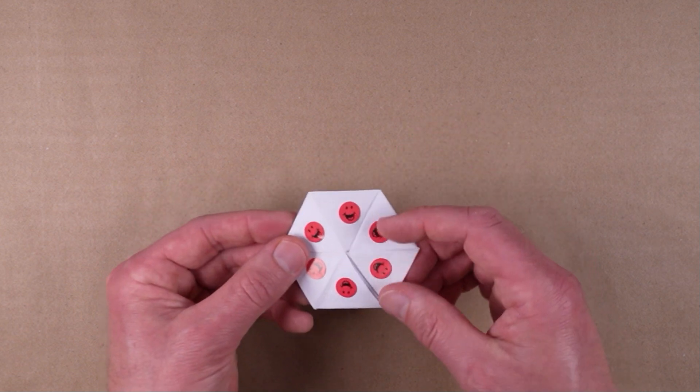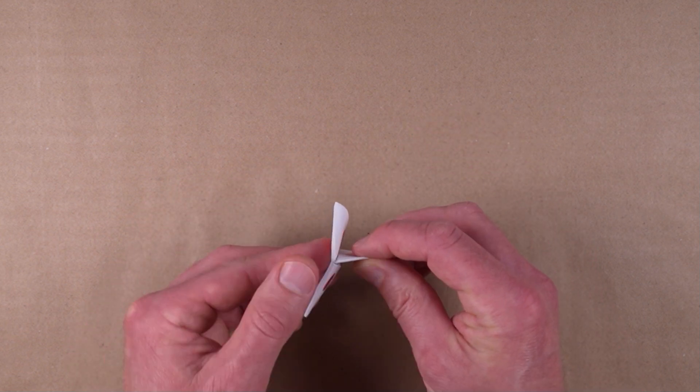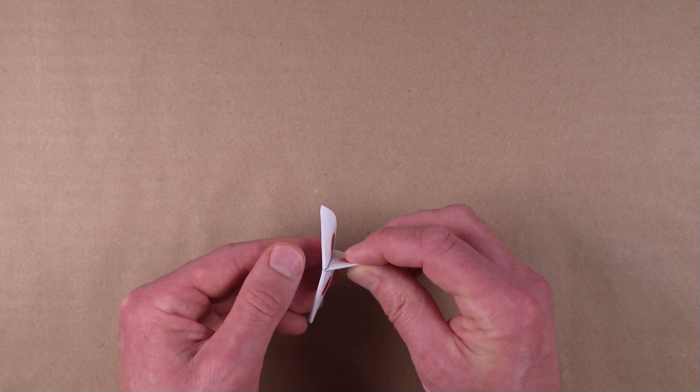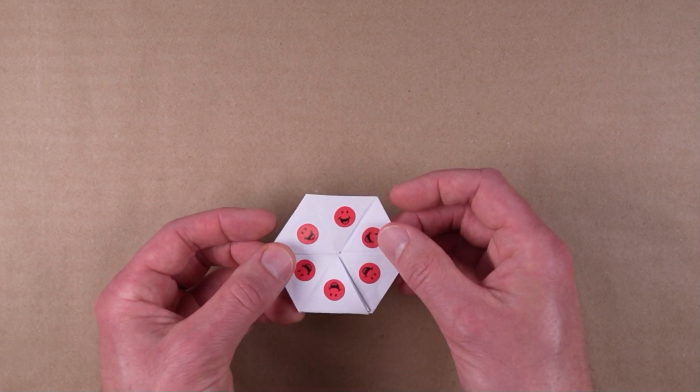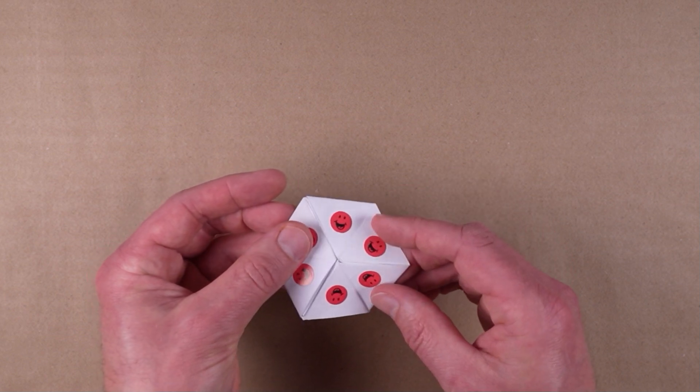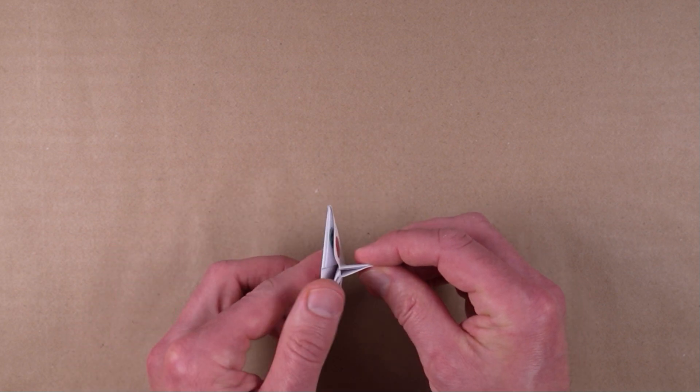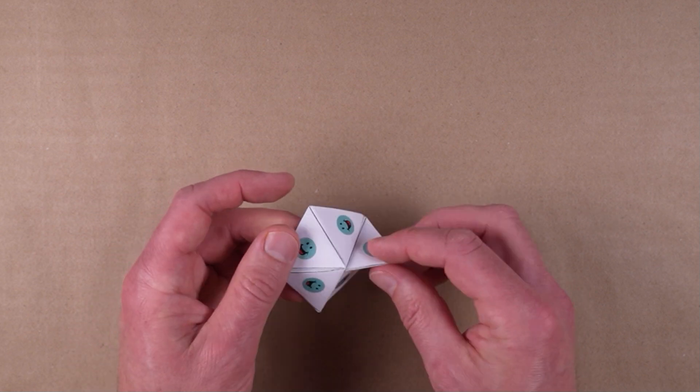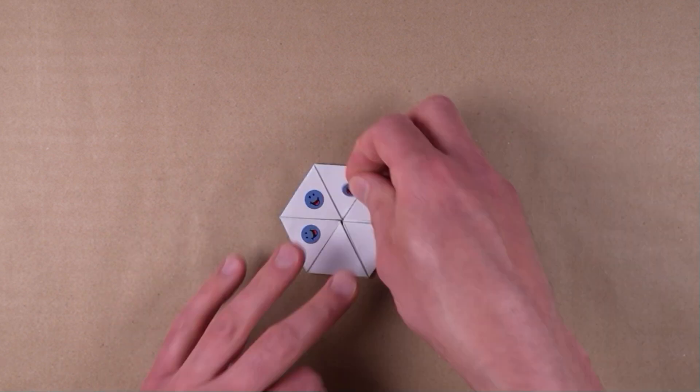As with trihexaflexagons, if you find that there is no opening to part on top for the last step of the flex algorithm, rotate the flexagon and start the algorithm using an adjacent pair of triangles. Executing the algorithm on the opposite side can also be helpful.